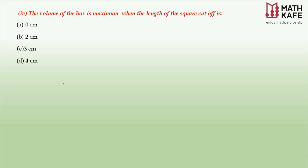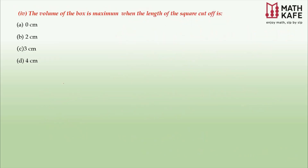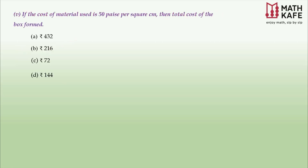The fourth question asks: when is the volume of the box minimum, and what is the length of the square cut off? We already found x = 3 from the previous part. We discard x = 9 because cutting 9 cm from both sides of an 18 cm sheet leaves nothing. Therefore, the answer is x = 3 centimeters.